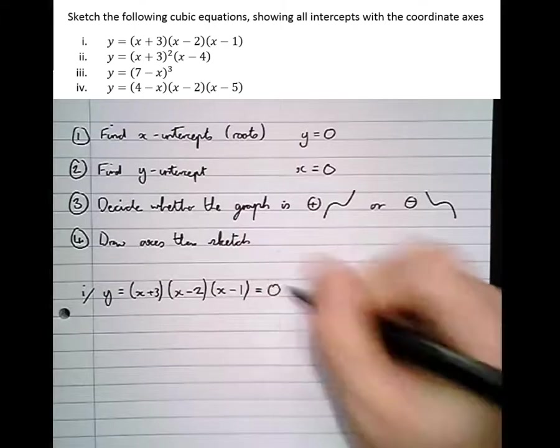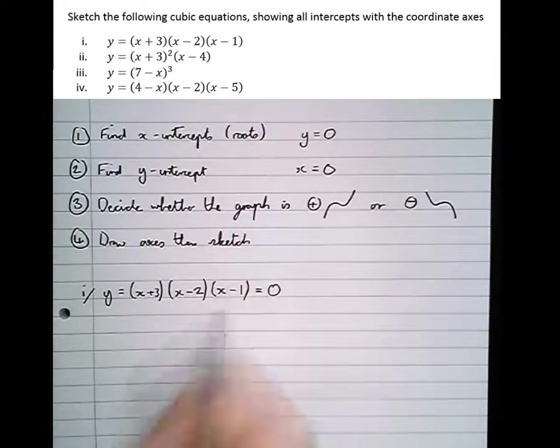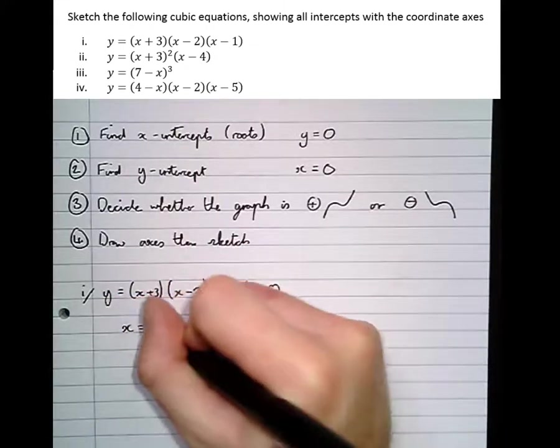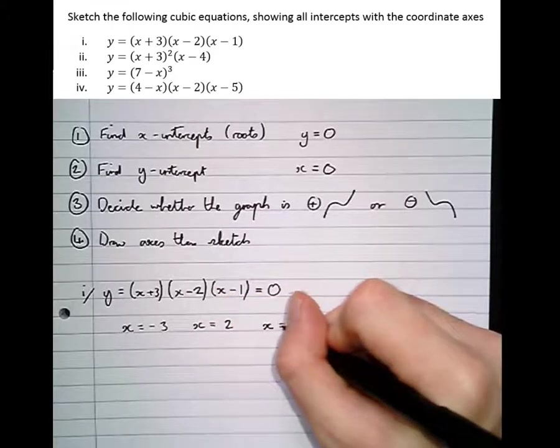And we want y to be equal to zero. So the x-intercepts, well, since it's nice and factorised, the things that make this zero, we can say x equals minus three, x equals two, and x equals one.